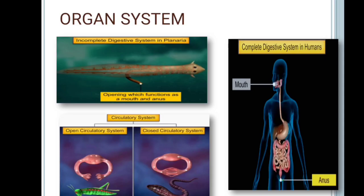Organ systems can also differ in complexity among various groups. For example, platyhelminthes have an incomplete digestive system, where a single opening outside the body acts as both the mouth and anus. Whereas human beings have a complete digestive system that has two openings — the mouth and the anus. The last distinction is the two types of circulatory system: open and closed.